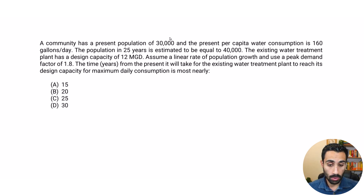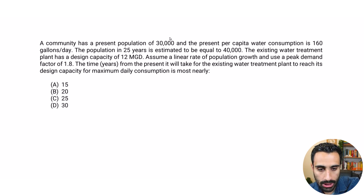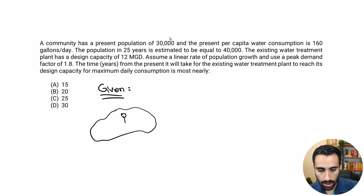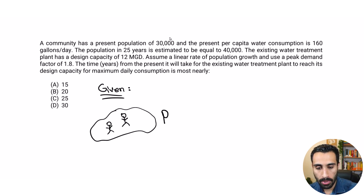If you can do these hard ones, you're definitely going to get the easy ones right for those fundamental FE type problems. Let's start with what we're given. We'll start with the present population — I'll call that the population at present — given to be 30,000.